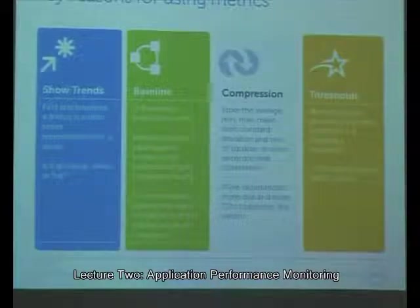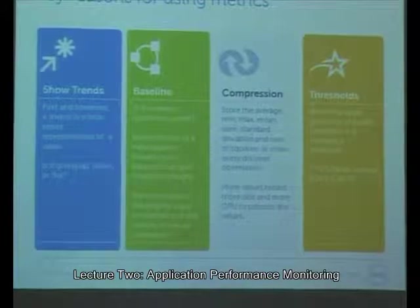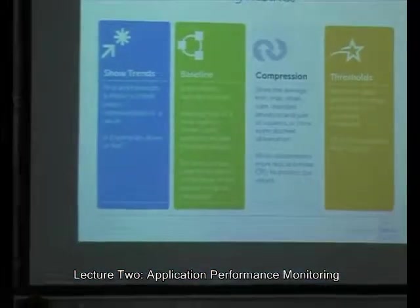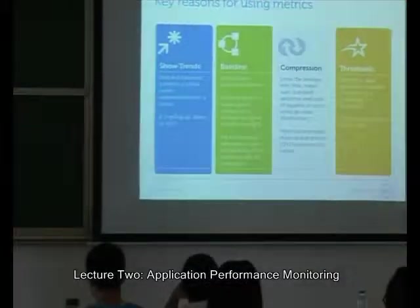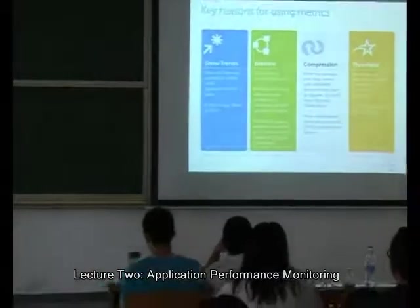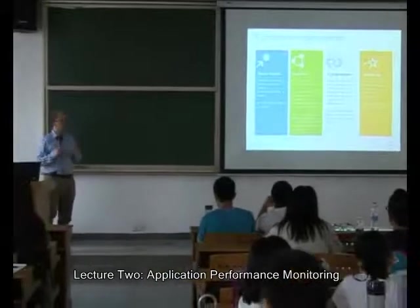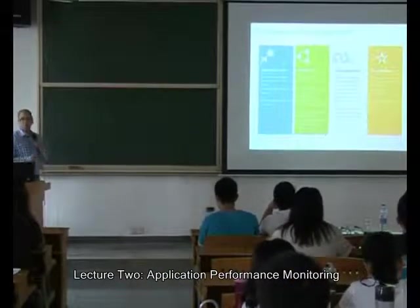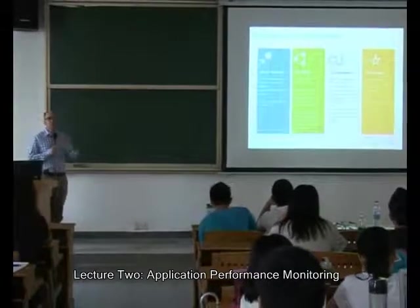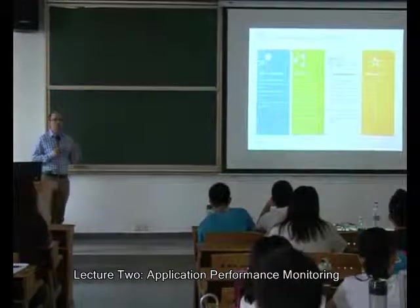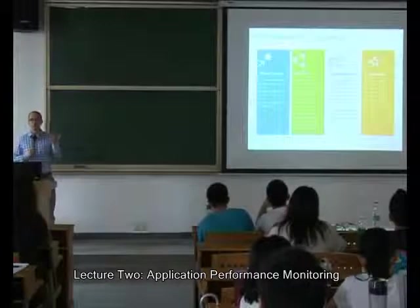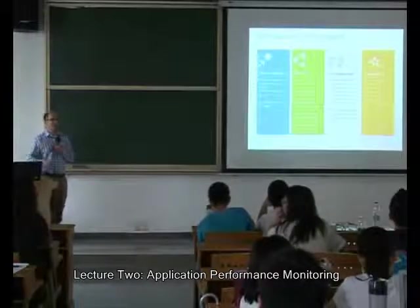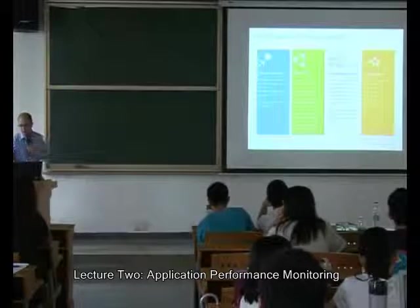Third: compression. We use metrics because raw data is really big. We summarize metrics so that we don't have to store every single thing about whatever you're monitoring. Fourth: thresholds. You set important thresholds — for example, CPU utilization going over a certain amount. We use a metric to figure out if the threshold is violated or not.